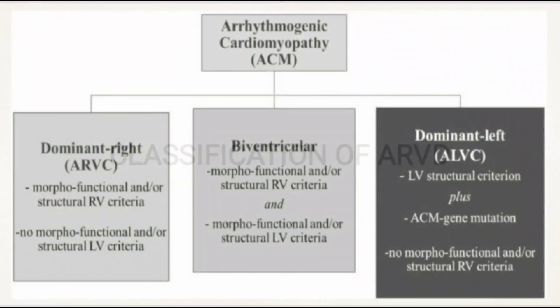Classification of ARVD: It is classified depending on which side of the heart is involved. The first is dominant right, which is the classic ARVC. The second is biventricular, which involves both RV and LV. The third is dominant left, that is arrhythmogenic left ventricular cardiomyopathy or ALVC. Depending upon the degree of severity, both RV and LV will be affected morphologically, structurally, and functionally.